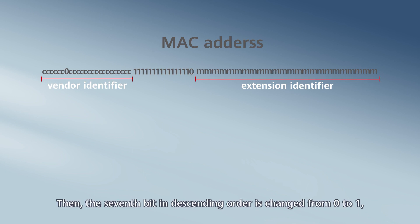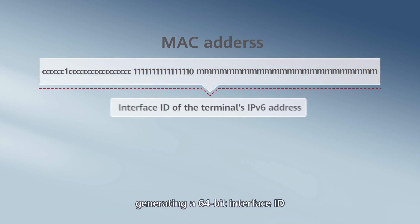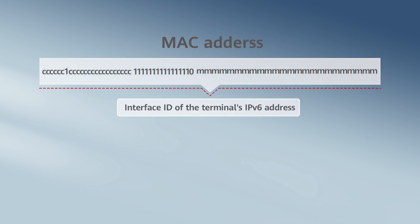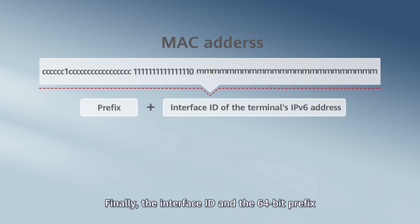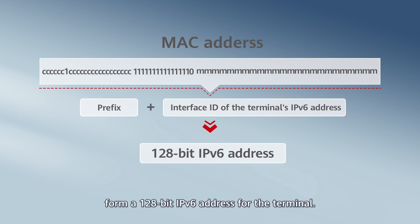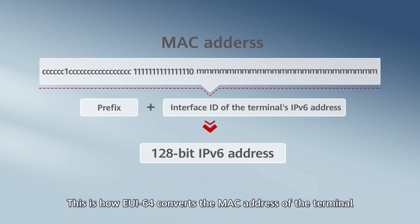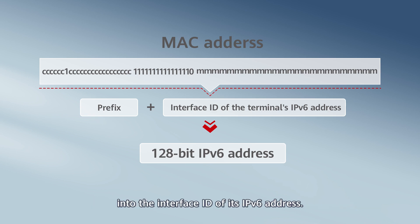Then, the seventh bit in descending order is changed from 0 to 1, generating a 64-bit interface ID. Finally, the interface ID and the 64-bit prefix form a 128-bit IPv6 address for the terminal. This is how EUI64 converts the MAC address of the terminal into the interface ID of its IPv6 address.